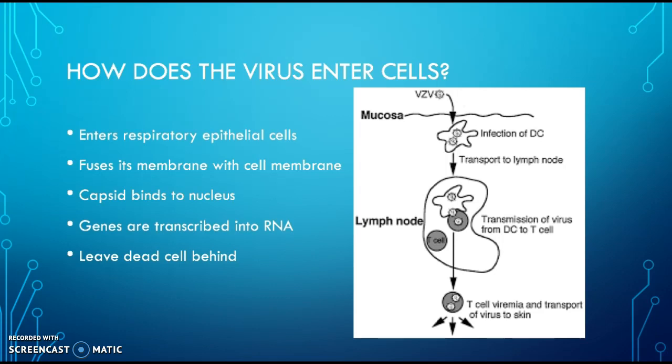The capsid is going to bond to the nucleus, and once it bonds, it can inject its viral DNA. This is when the viral DNA is copied, and after it's copied, the genes are going to be transcribed into RNA. And then once the RNA is transcribed, it's going to reach ribosomes, where the RNA is translated into capsid proteins.